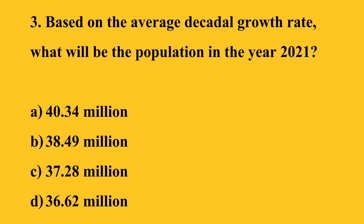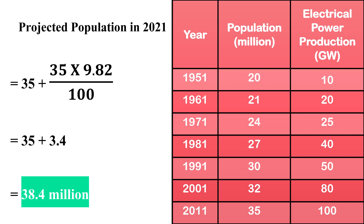The third question is: based on the average decadal growth rate, what will be the population in the year 2021? The average decadal growth rate is 9.82%. The population at the start of the decade, that is 2011, is 35 million. The growth in population would be 35 into 9.82%, which is 3.4 million. Therefore, the population in 2021 will be 35 million plus 3.4 million, giving an answer of 38.4 million.